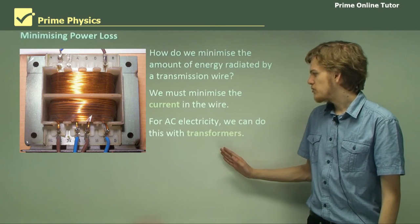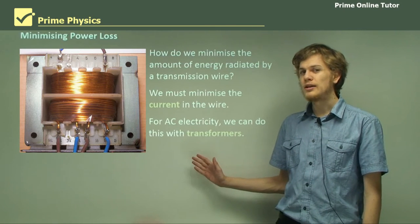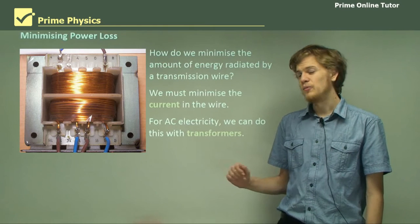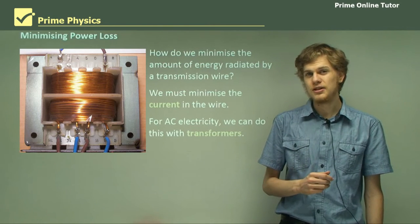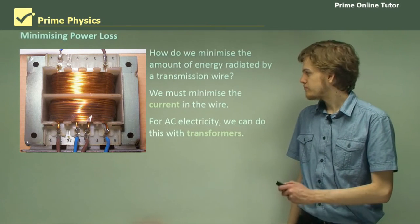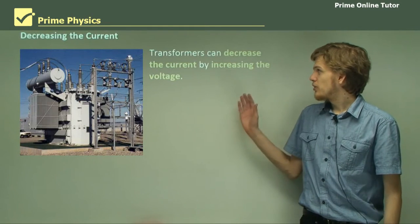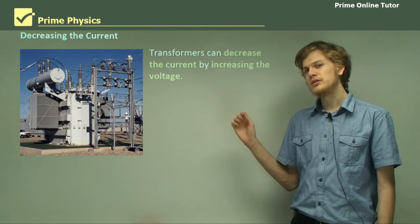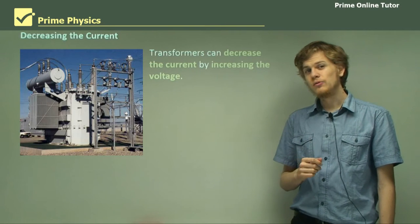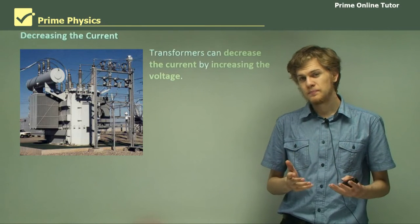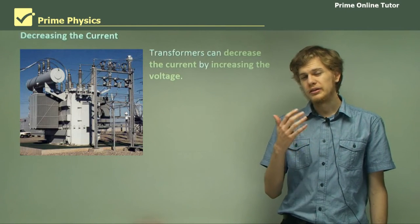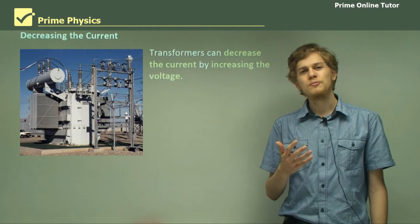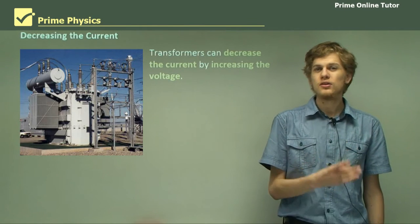So for AC electricity we can do this with transformers. We can't do this for DC electricity. So transformers are able to decrease the current by increasing the voltage. We've learned about how transformers do this. Transformers will decrease the current in the same ratio that they increase the voltage.